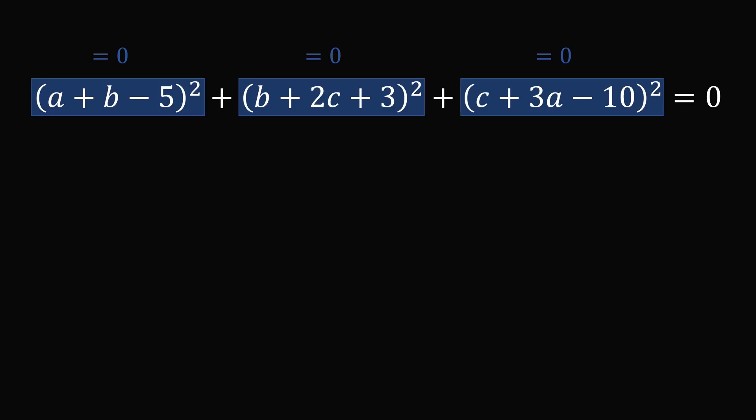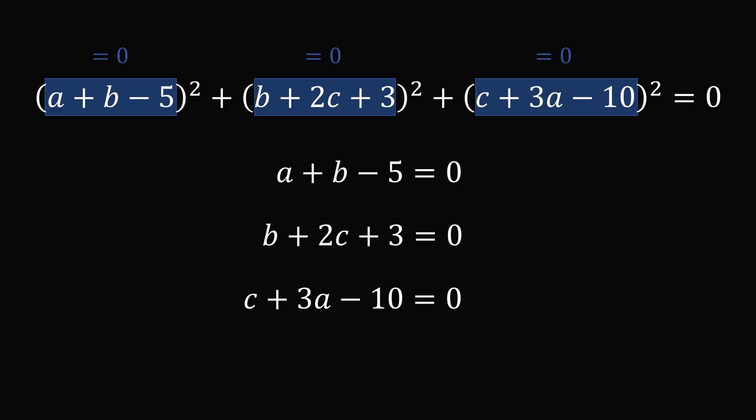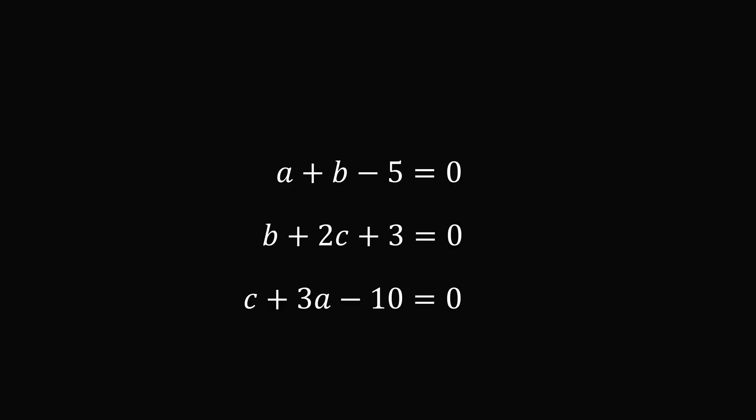So a plus b minus 5 is equal to 0, b plus 2c plus 3 is equal to 0, and c plus 3a minus 10 is equal to 0. We have three different equations, and we now have a system of equations for a, b, and c. We can solve for a, b, and c from these three equations.